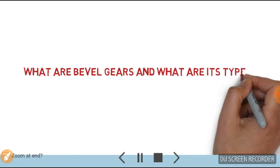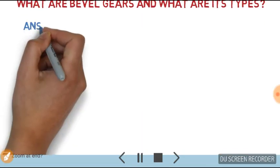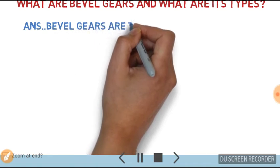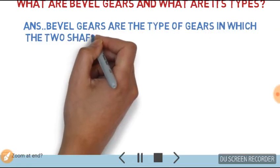What are bevel gears and what are its types? Answer: Bevel gears are the type of gear in which the two shafts happen to intersect.